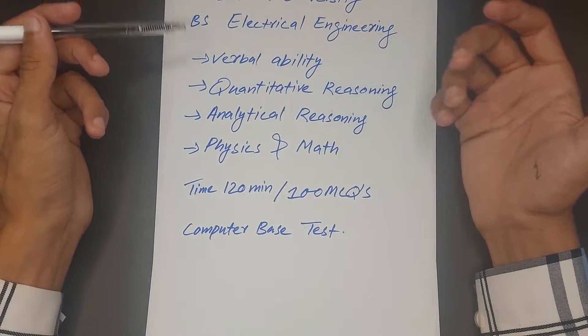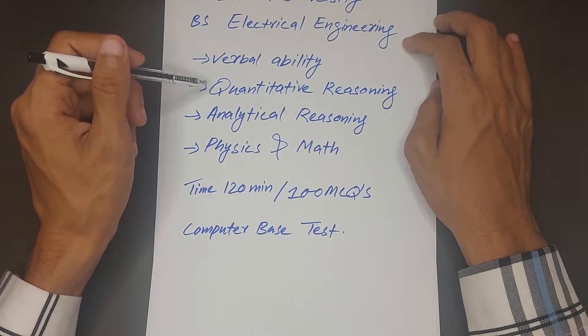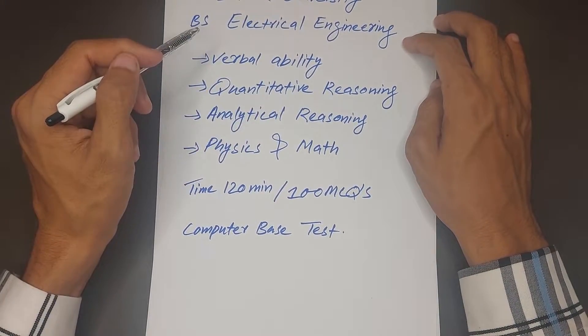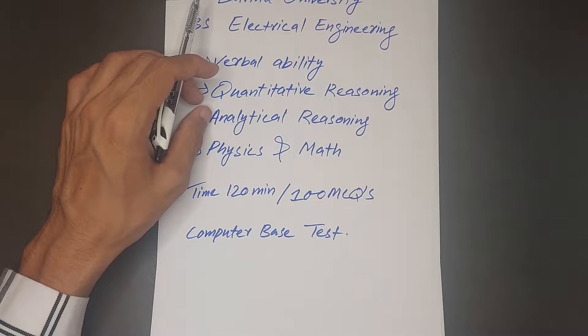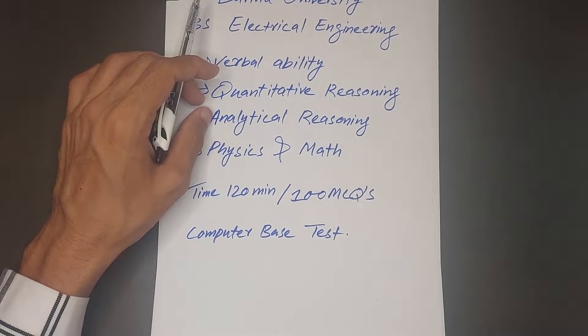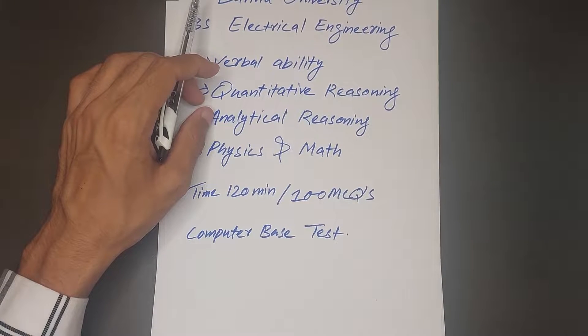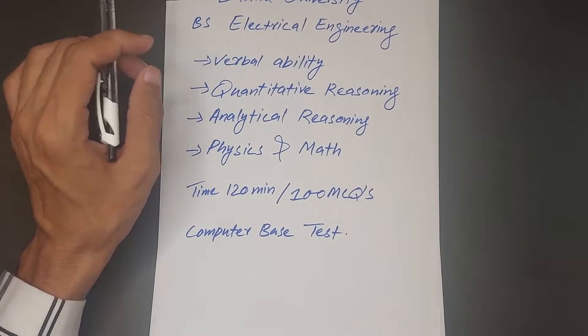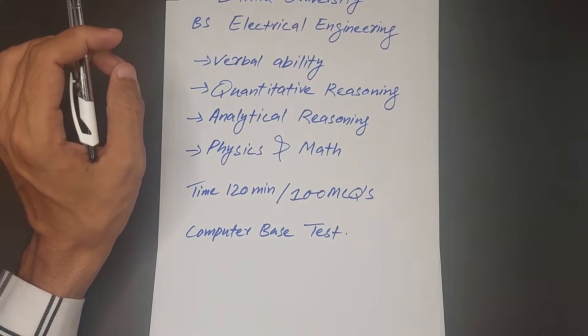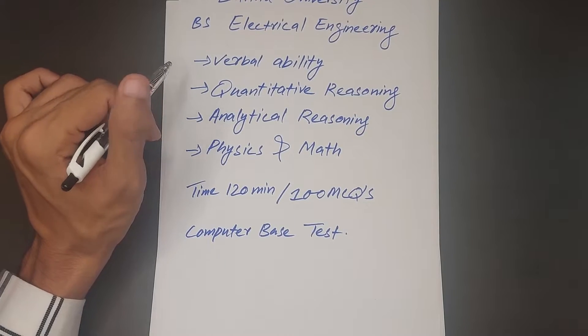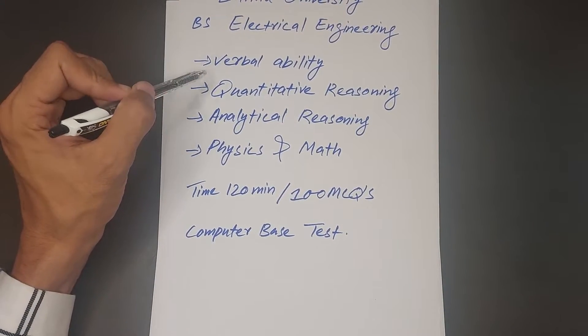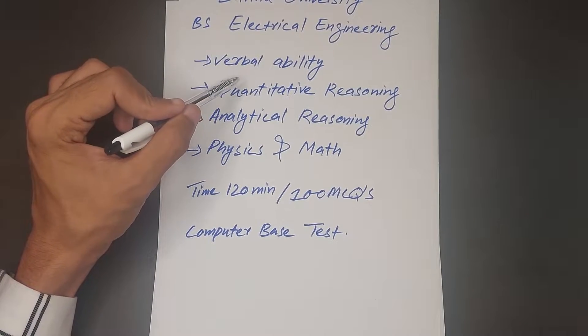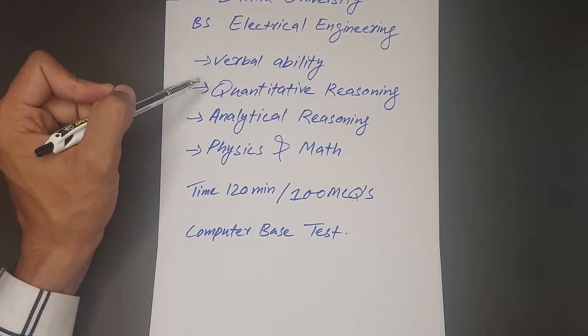The second portion is quantitative reasoning. Let's see the definition of quantitative reasoning. The ability to use numbers and mathematical concepts to solve mathematical problems, as well as your ability to analyze data presented in a variety of ways such as in table or graph. These are mathematical reasoning questions.